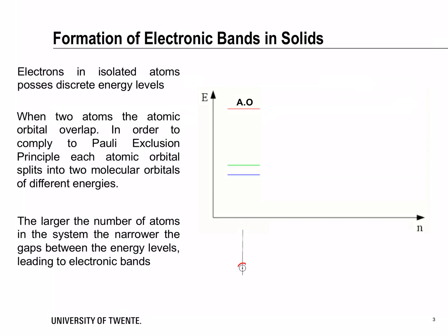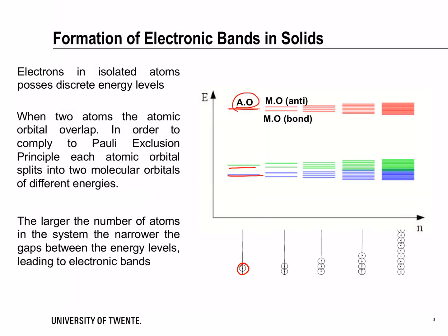When you have a single atom, you have discrete energy levels where the electrons might be located, and these are called atomic orbitals. When you have two atoms in the system, these atomic orbitals are split into molecular bonding and antibonding orbitals. As you increase the number of atoms, the energy difference between these molecular orbitals decreases to the point where it becomes a continuum of energy levels, leading to the formation of electronic bands.